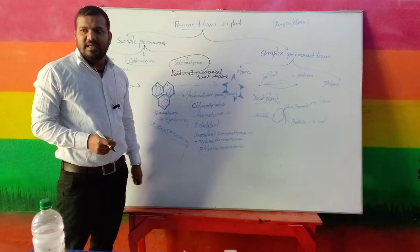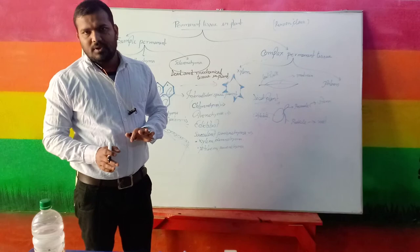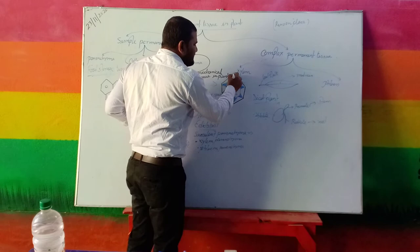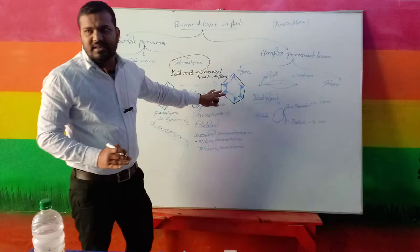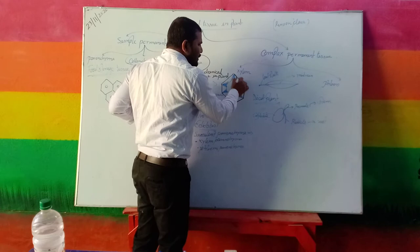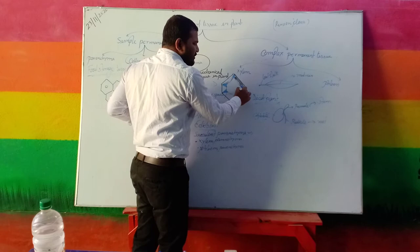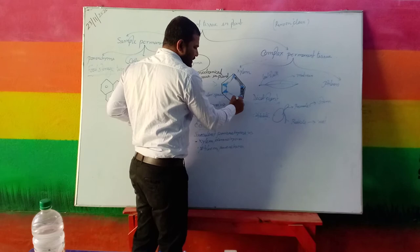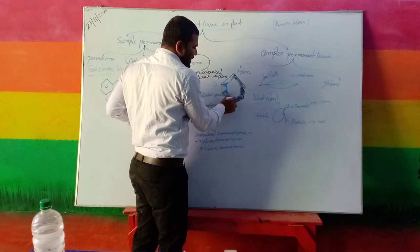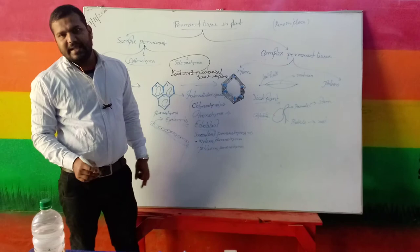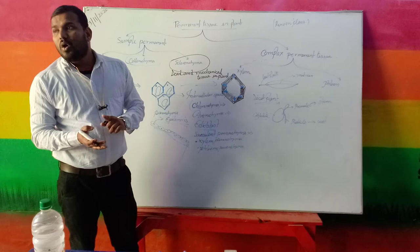Due to excessive storage, the cell wall becomes the thickest, and due to aging the cytoplasm is lost. A cell without cytoplasm means it is a non-living cell; only the thick cell wall remains. This type of dead cell or group of dead cells present in the plant is termed sclerenchyma tissue. Features: all cells are dead, cytoplasm is absent, vacuole is absent, and there is no intercellular space.